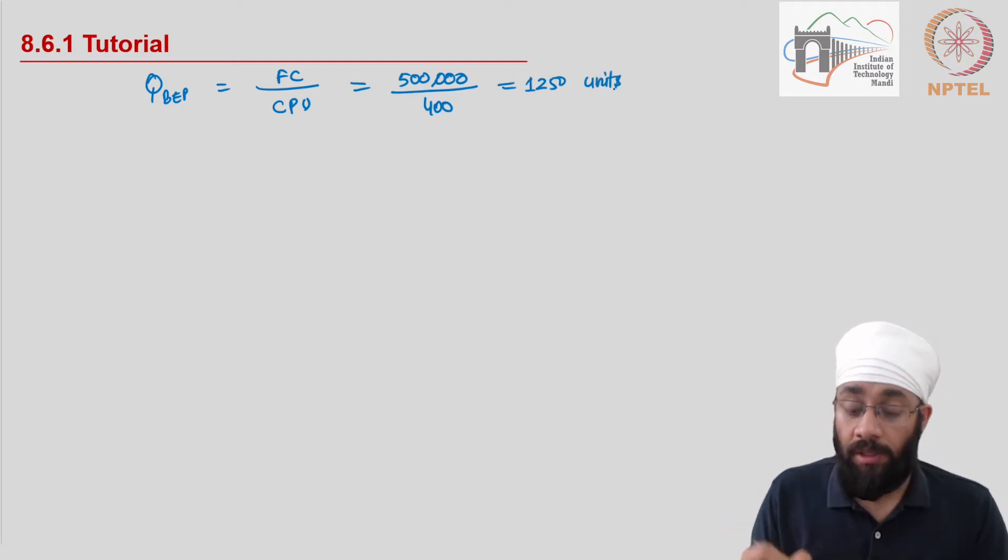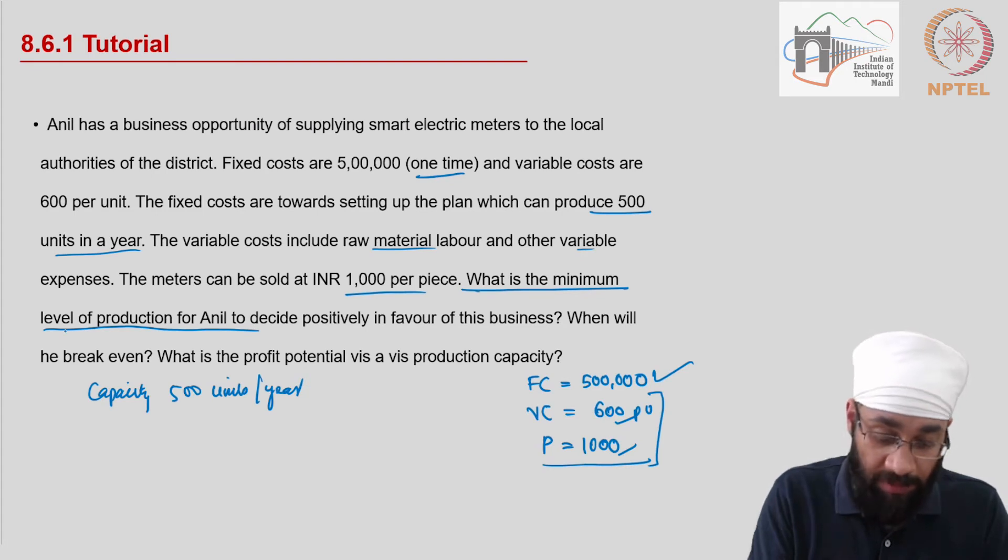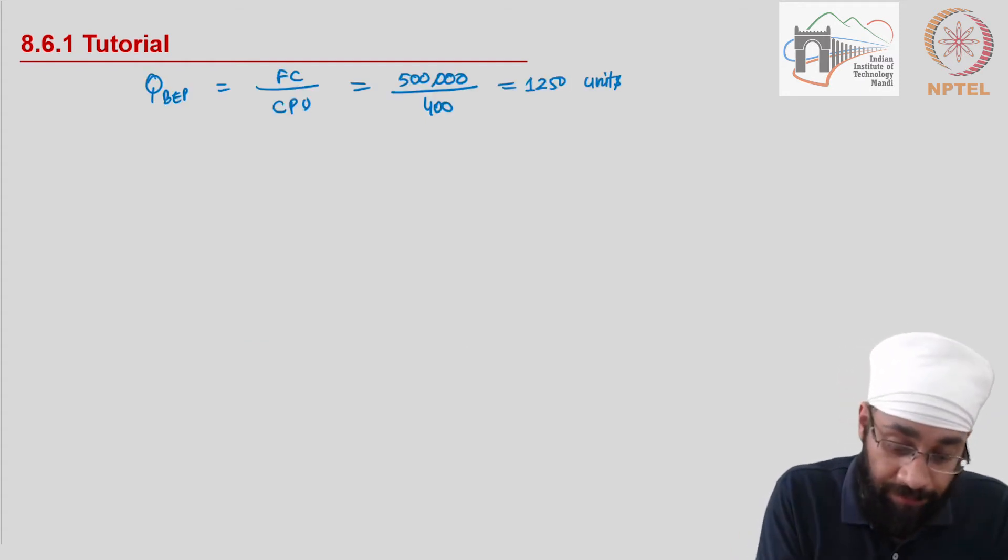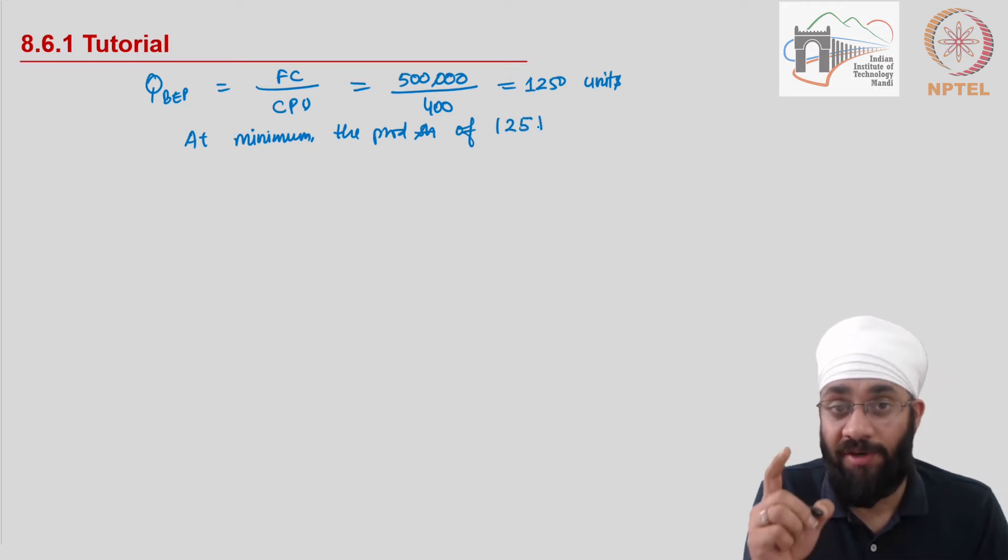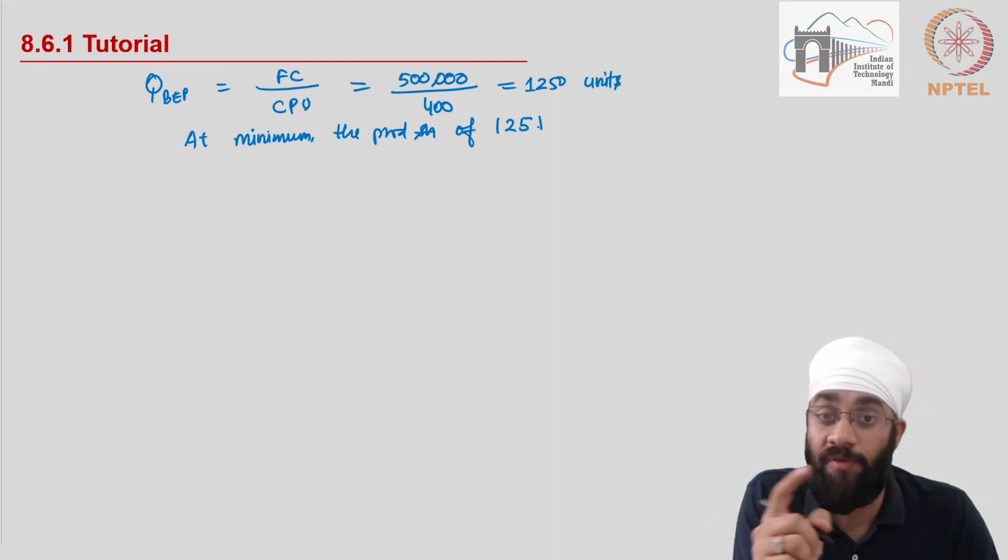The first question was: what is the minimum level of production for Anil to decide positively in favor of this business? So at minimum, this means at minimum the production of 1,250 units. Because at 1,250 units it is no profit no loss. Why would you start a business for no profit no loss? So mathematically there has to be at least a positive number for you to decide.